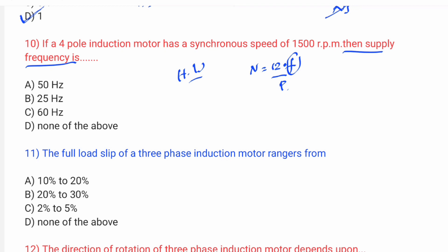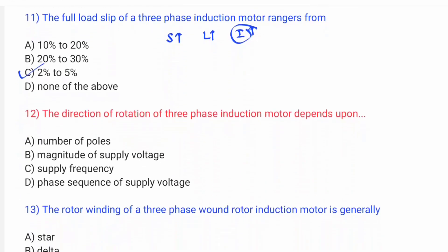The full load slip is equal to 2–5% for a three-phase induction motor. At full load, the slip is approximately 2 to 5 percent of synchronous speed. Overcurrents are drawn by the machine during starting.